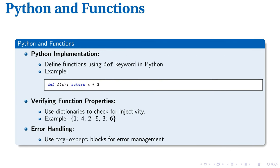The key to implementing functions in Python lies in the def keyword. For instance, the function fx returning x plus 3 is defined as follows: define f of x return x plus 3.